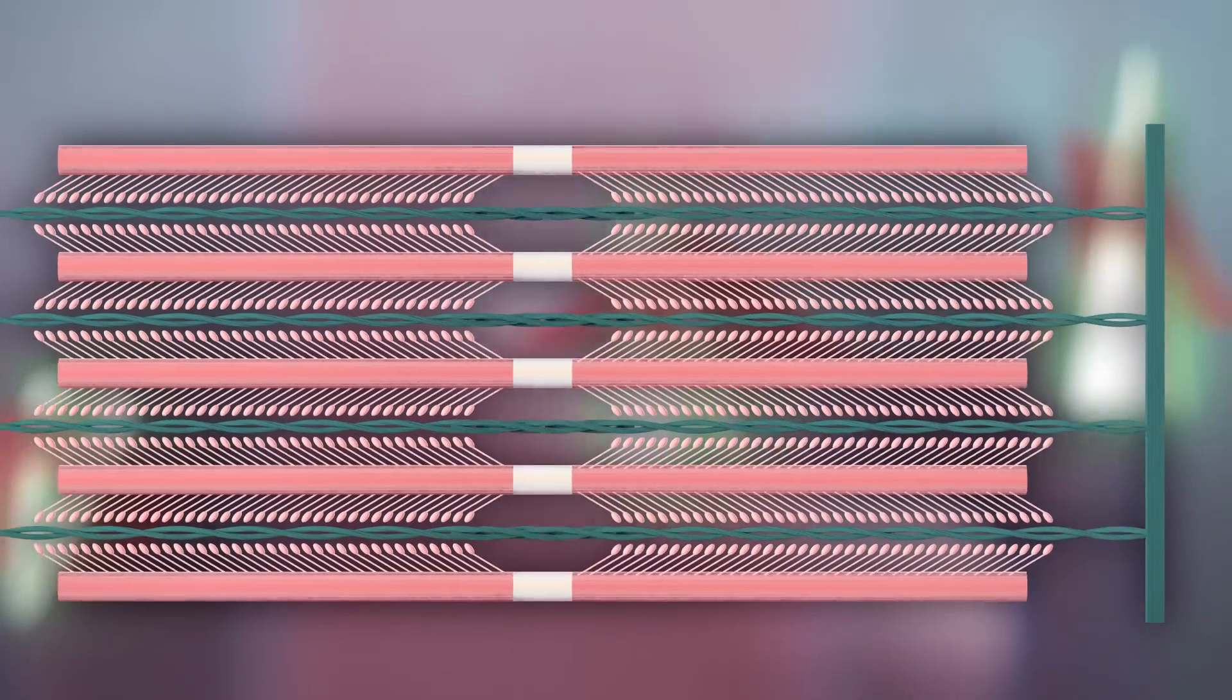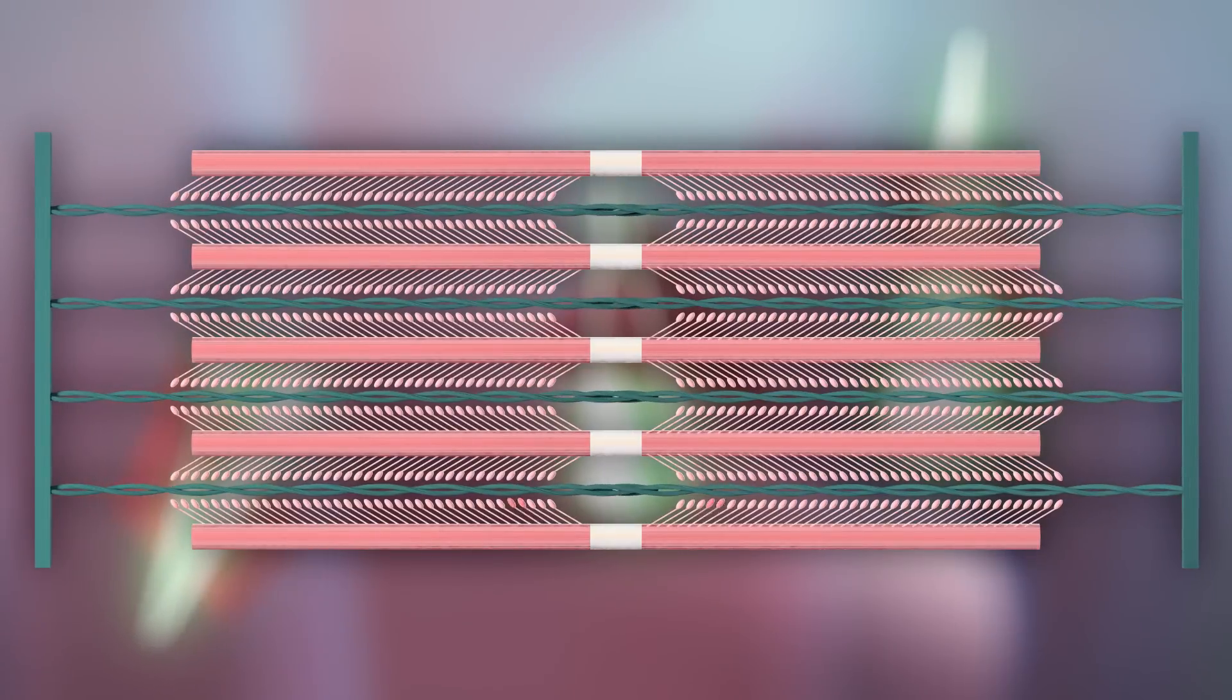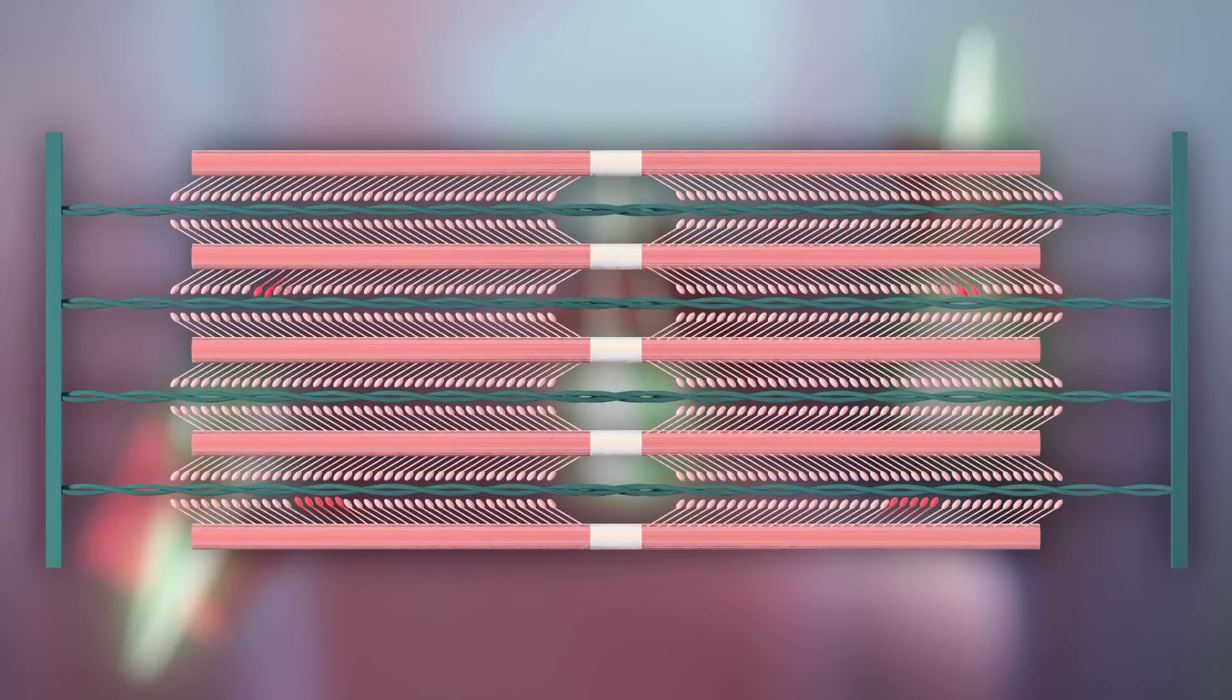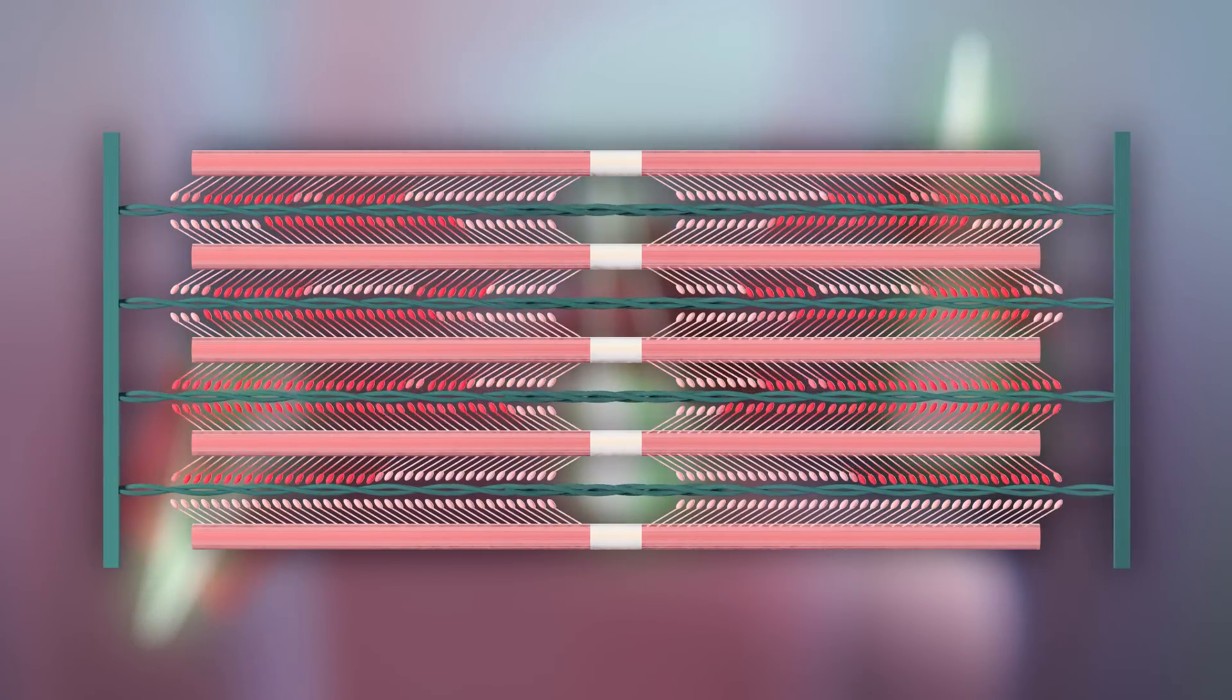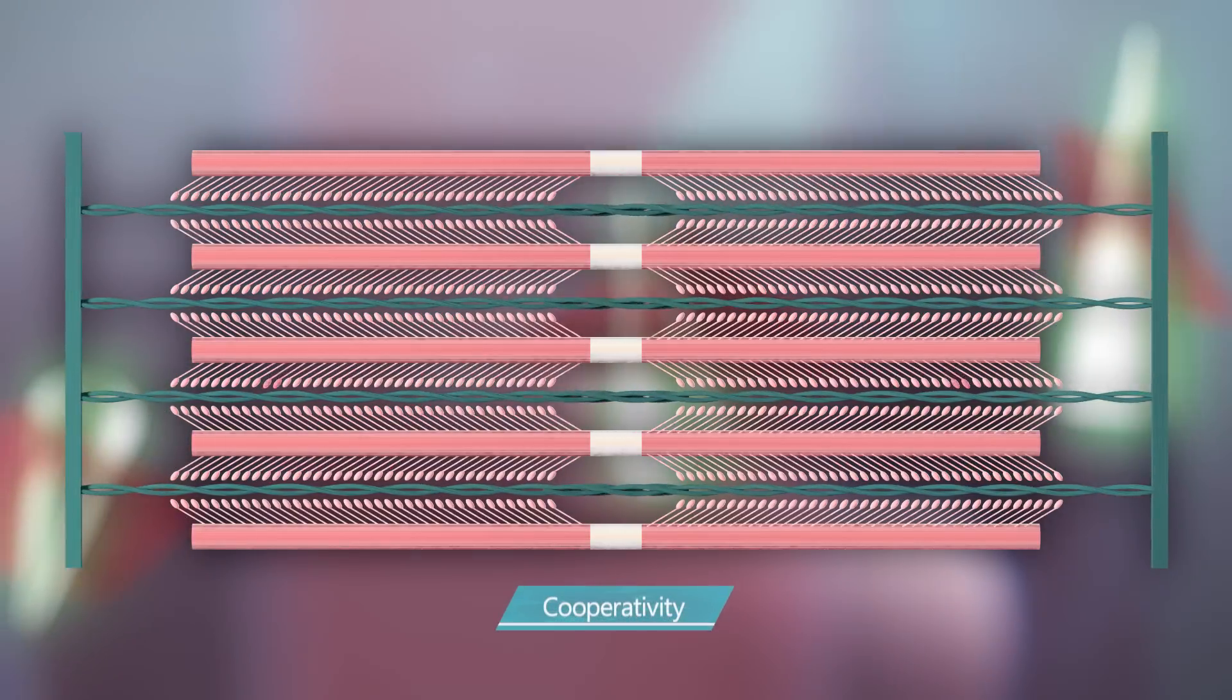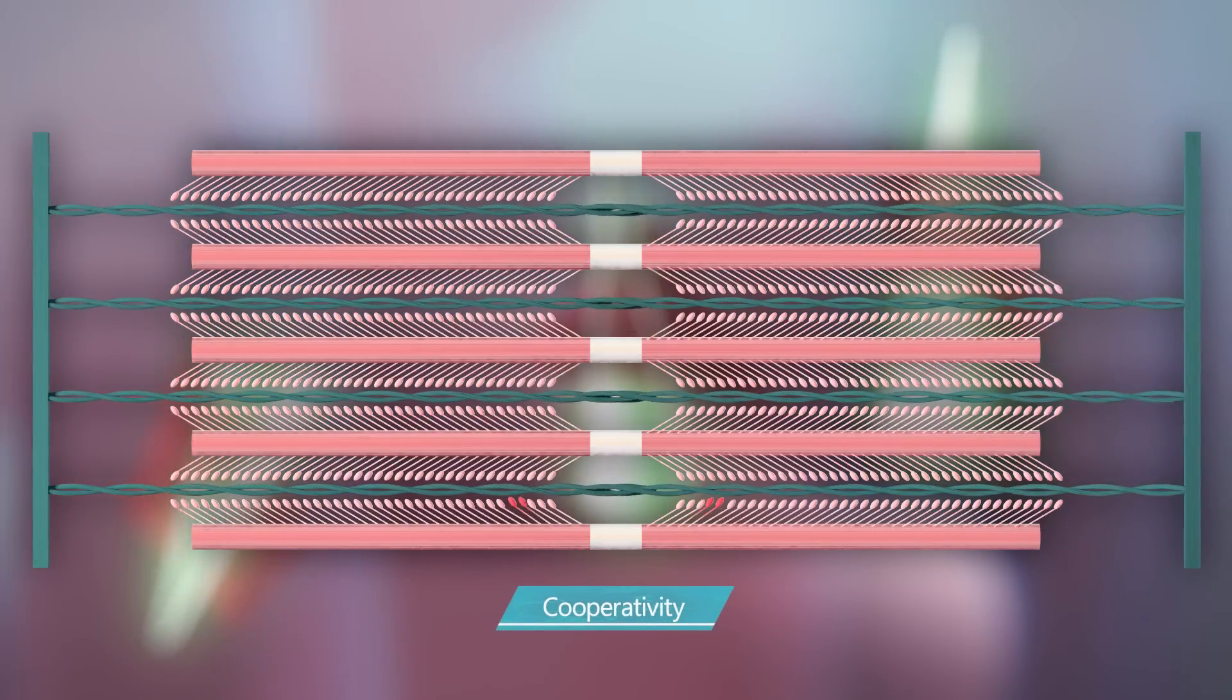This power stroke movement does not happen randomly, but has the quality of affecting surrounding myosin molecules to do the same. This quality known as cooperativity is important in understanding how the heart beats.